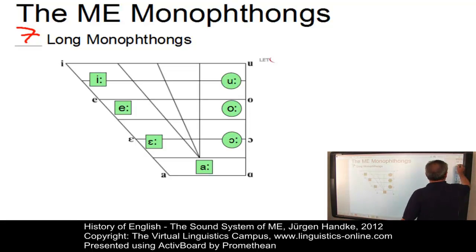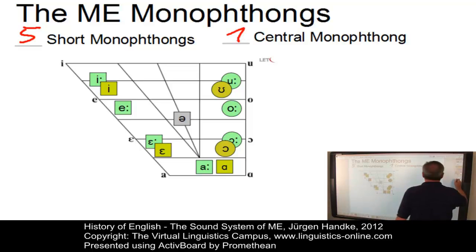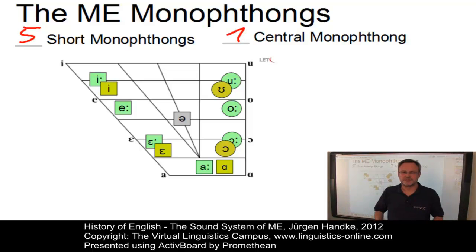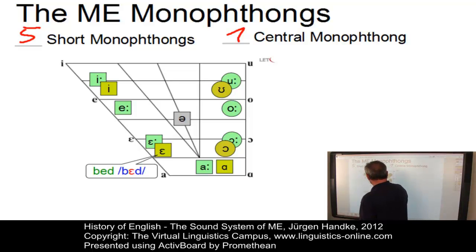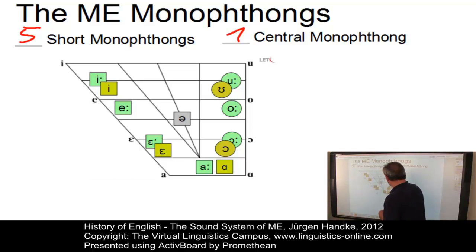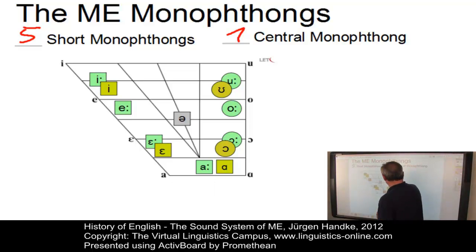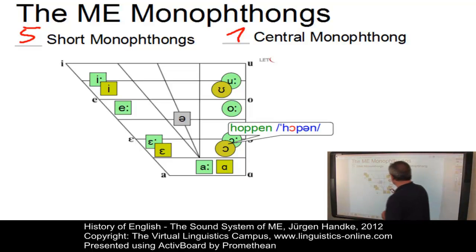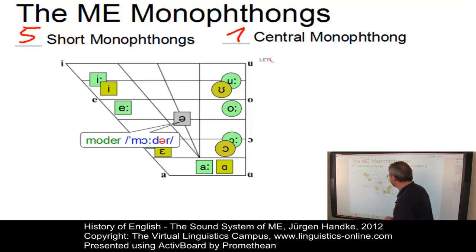Let's now add the five short vowels and the central monophthong to this system. There was a short /ɪ/ as in 'kissen', a short /ɛ/ as in 'bed', a short /a/ slightly backed as in 'that', a short /ɔ/ as in 'hoppen', a short /ʊ/ as in 'full', and last but not least a central vowel schwa as in 'moder', present-day English 'mother'.